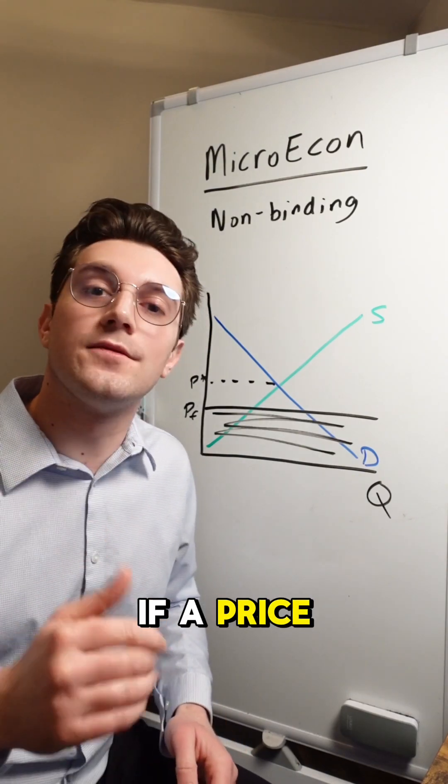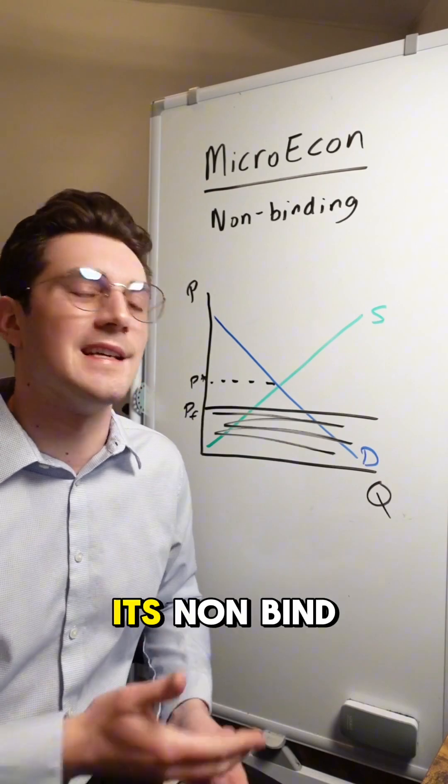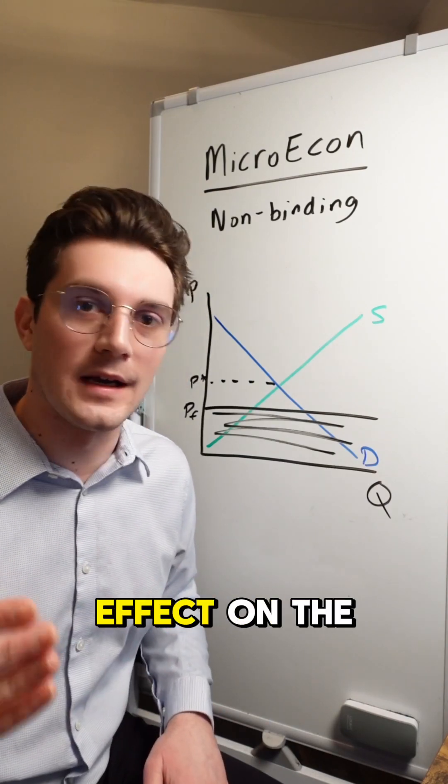So in summary, if a price floor occurs below the equilibrium price, it's non-binding. It has no effect on the market.